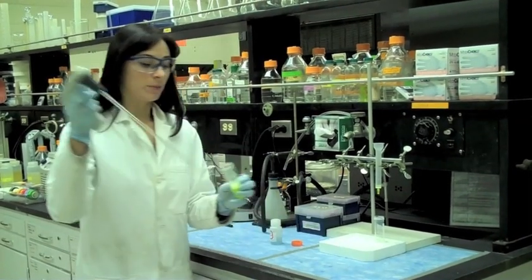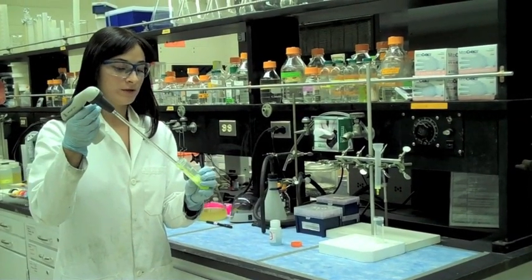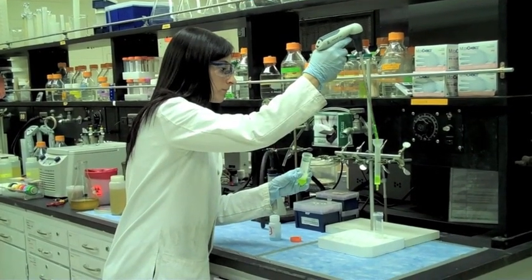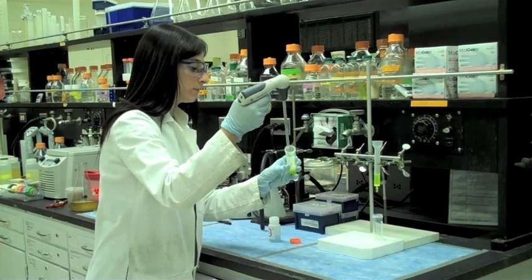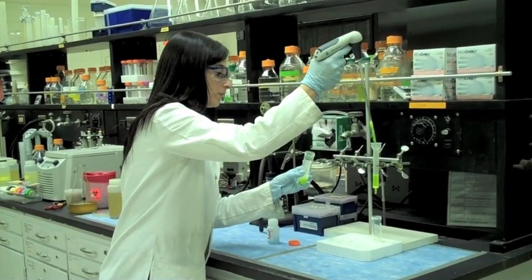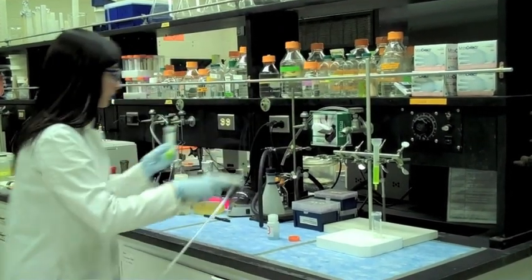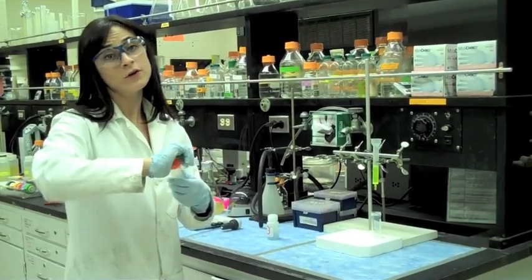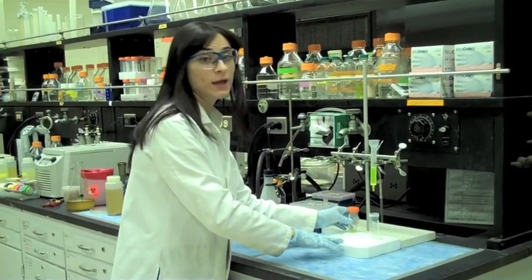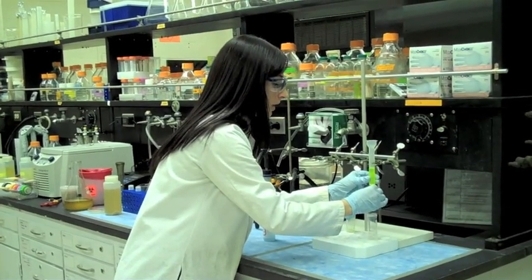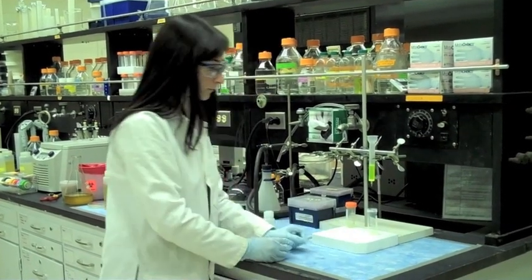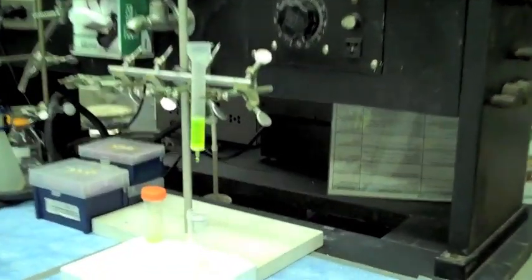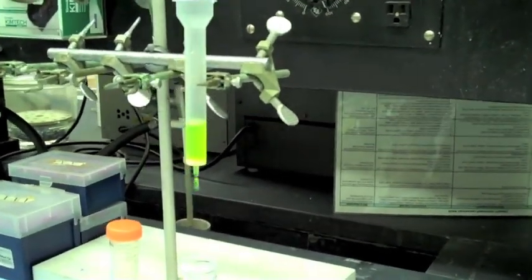Next, we will apply the incubated beads and lysate to a column. The first step is to collect the material that does not bind to the nickel beads. If there is a large amount of protein, we may have some excess protein that cannot bind. This material will be our flow through.